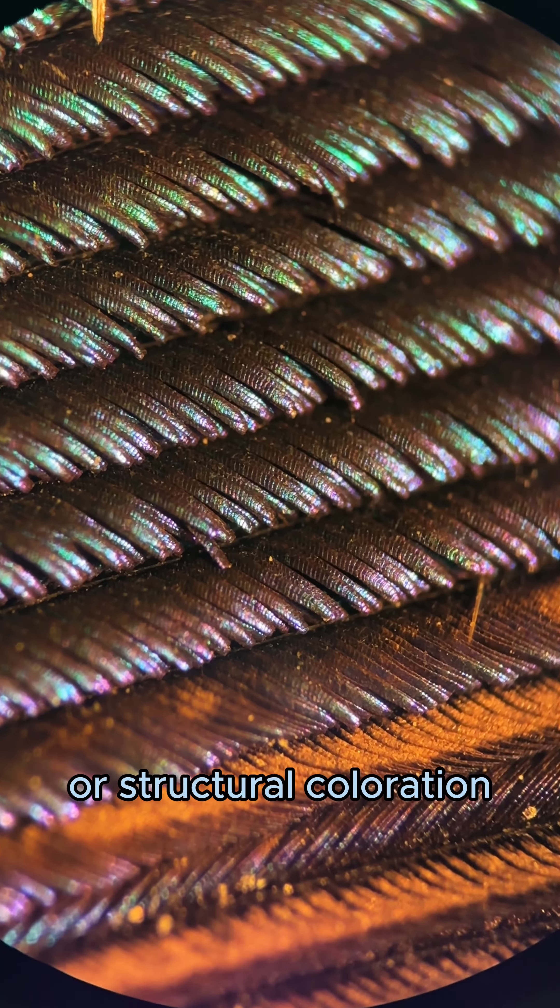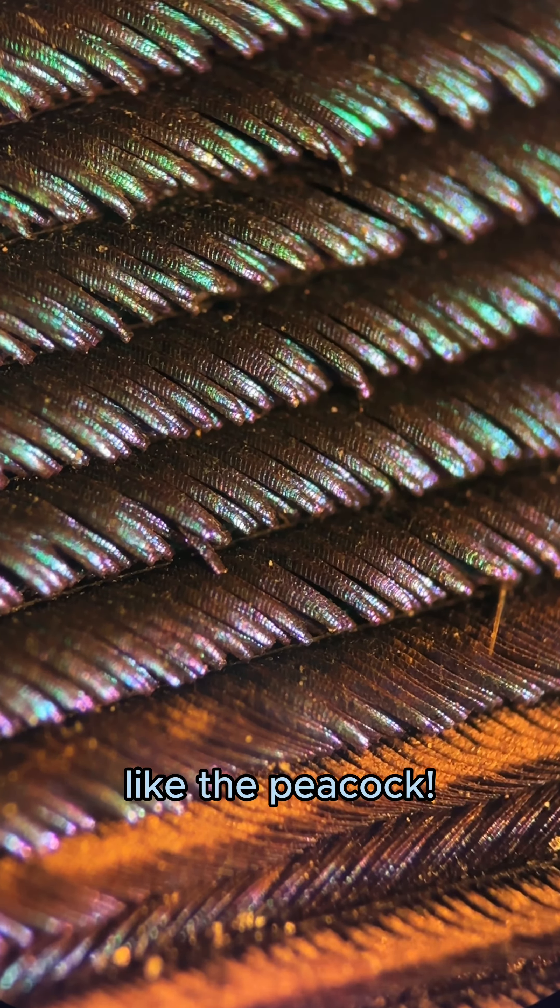Organisms have three main ways of achieving a colorful appearance: via pigments, bioluminescence, or structural coloration, like the peacock.